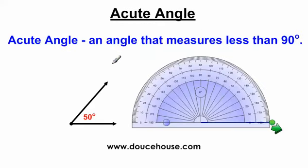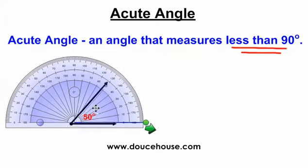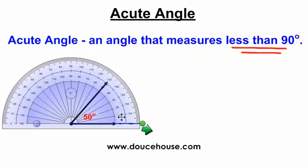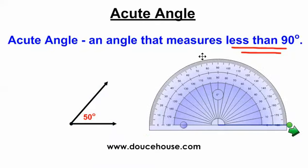Let's move on to the acute angle. An acute angle is an angle that measures less than 90 degrees. This is an example of an acute angle because it's 50 degrees, which is less than 90. We're talking about angles from 1 degree all the way up to 89 degrees. If I were to take a protractor and measure the angle, it goes from 0 to 50, so this is a 50 degree angle — that's an acute angle.